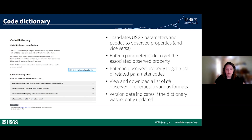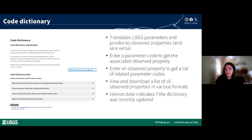The last new piece added to WDFN for understanding sample data is the code dictionary. This page helps you translate between the USGS P codes you're familiar with and the new observed properties. You can search by P code to get the associated observed property, or search by observed property to identify the associated P code or codes. As Lee mentioned during the WQX review, observed properties do not have the same amount of information as USGS parameters historically have — in particular, they lack the unit of measurement, which means an observed property will often translate to more than one parameter code. You can also access a full list of observed properties in several formats and see the latest version date.